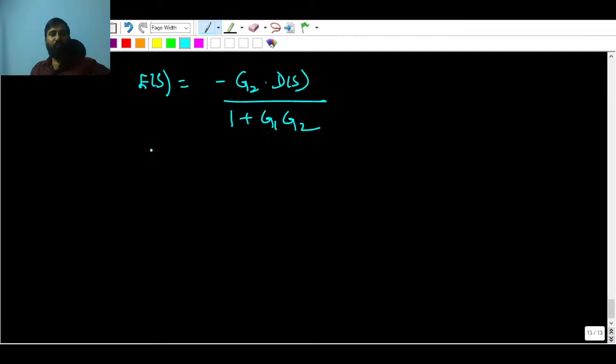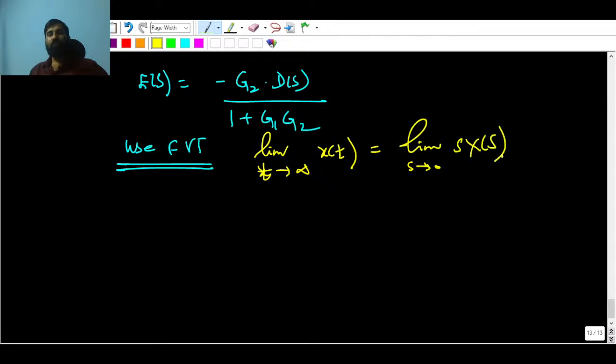Now you can use the final value theorem. What final value theorem says is that if you are applying limit x, I mean t tending to infinity x(t), I can write in Laplace domain that s tending to 0, s·X(s). There are some constraints, some limitations of final value theorem, but at this moment we do not need to understand what is the limitation and everything. We have to finally obtain the steady state error, keeping in mind that in the numerator there is G2 present. Do not keep G1, because in hurry you might keep G1 as well.